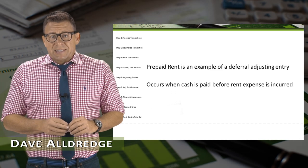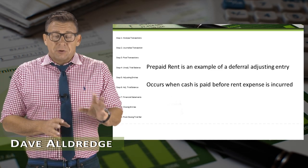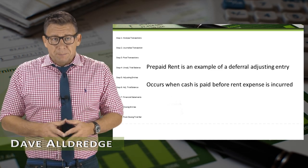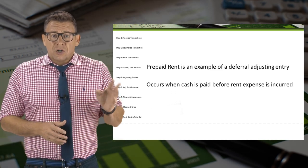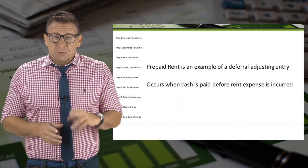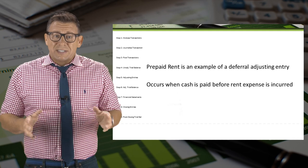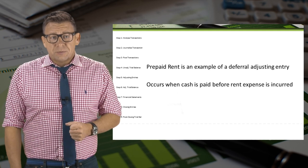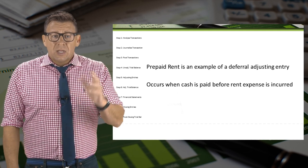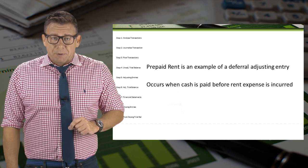Prepaid rent is an example of a deferral adjusting entry. It occurs when cash is paid before rent expense is incurred. Let's look at an example.